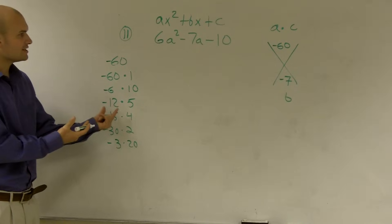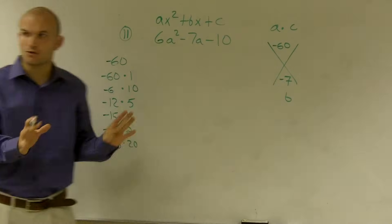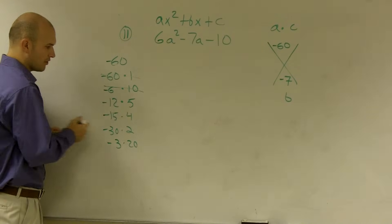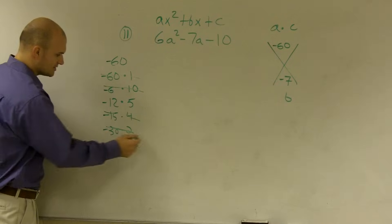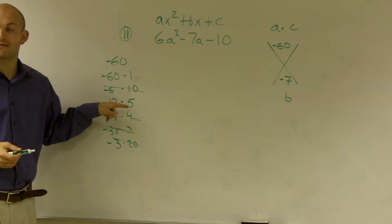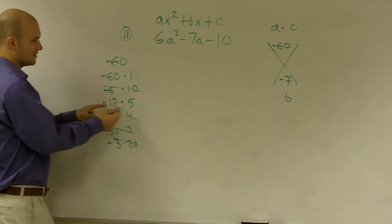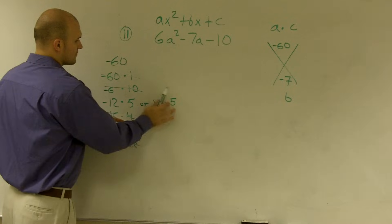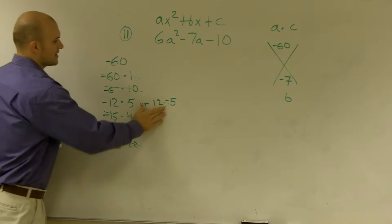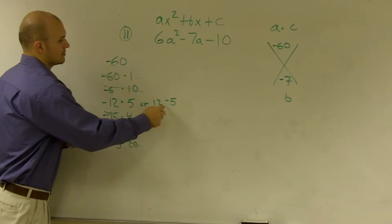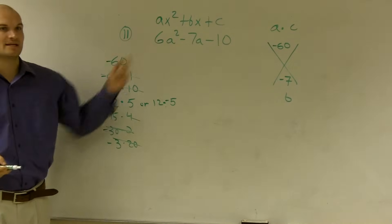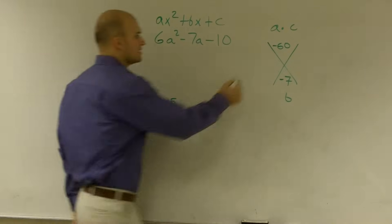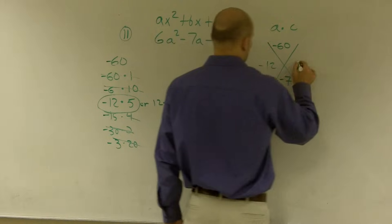However, just look at the numbers — what numbers have a difference of 7? Negative 60 and 1 don't. Negative 6 and 10 have a difference of 4. Negative 3 and 20 have a difference of 17. But negative 12 and 5 have a difference of 7. Which two of these add up to negative 7? Negative 12 and 5. That is my solution.